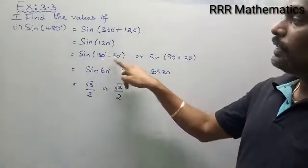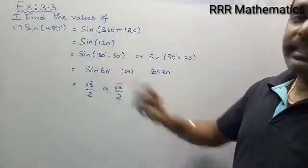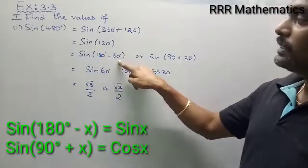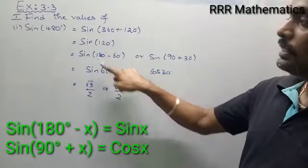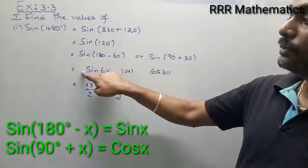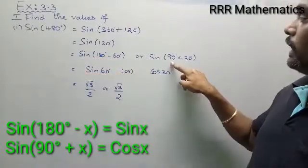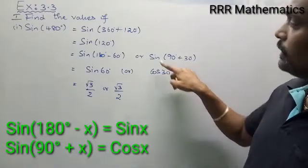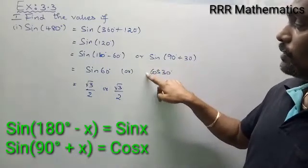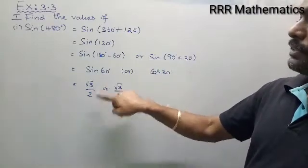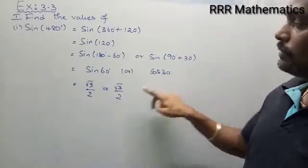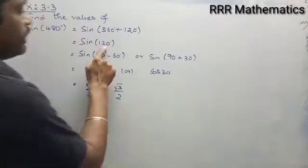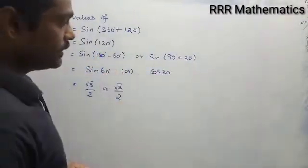For 180 minus 60, it lies in the second quadrant, and 90 plus 30 is also in the same quadrant. For 180 minus theta, there is no change — so sin 60 is the result, and in the second quadrant sin is positive. For 90 plus 30, sin becomes cos theta, that is cos 30, and the result is also positive. Sin 60 gives root 3 by 2, and cos 30 gives root 3 by 2. In the examination you can proceed using either 120 as 180 minus 60 or 90 plus 30.